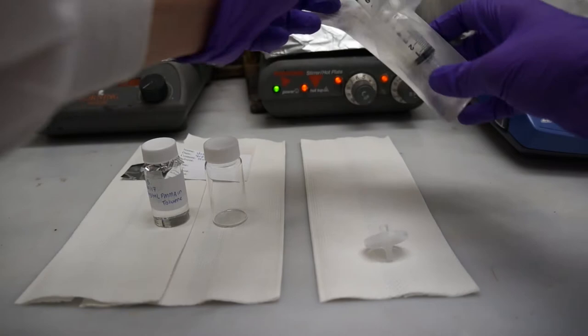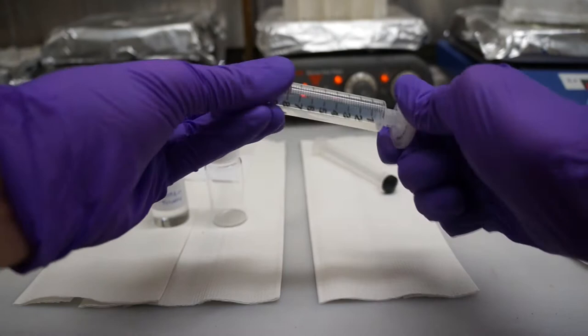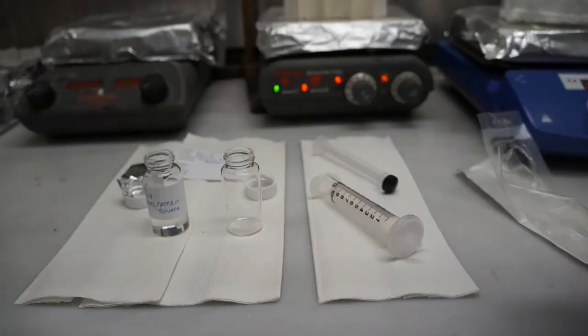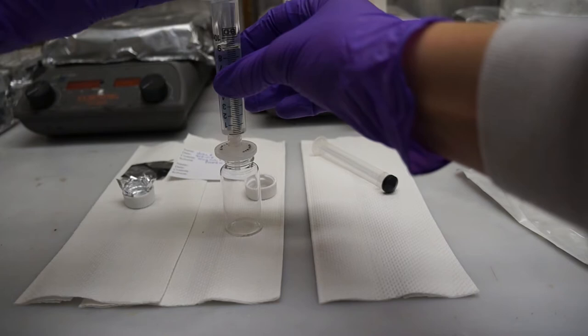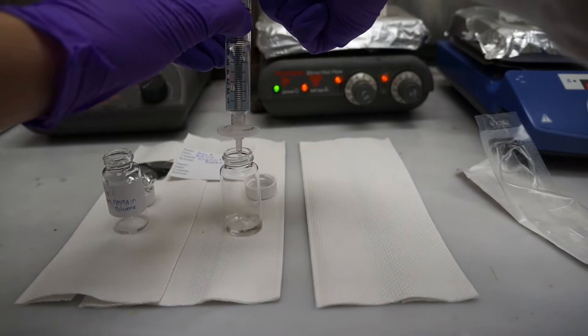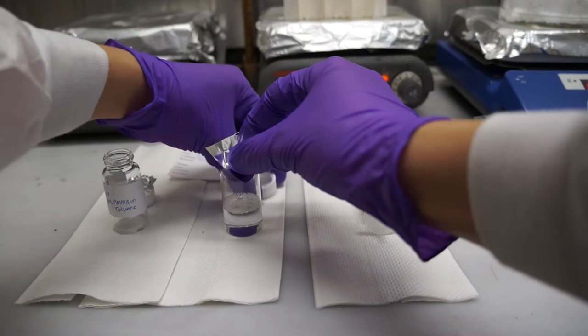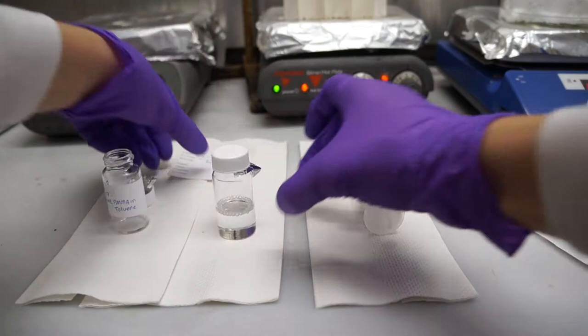The next day, we can return to the hood with our fully dissolved PMMA solution, a new scintillation vial, a syringe, and a filter attachment for the syringe. After attaching the filter, we can pour our solution into the syringe and push the solution through the filter with the syringe's plunger. This is done to filter any foreign particles that may have gotten into the vial out of the solution, so that we can minimize imperfections or irregularities in the thin film we will eventually make. Place a piece of tin foil between your filtered solution's cap and vial, and don't forget to label your sample.